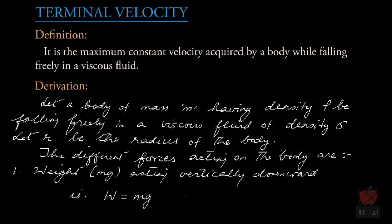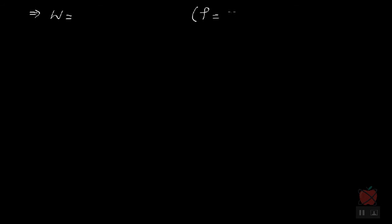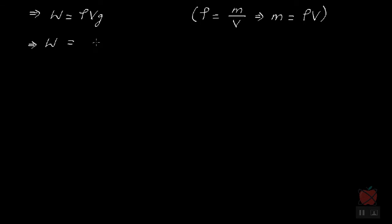Weight W equals mg. Since density rho equals mass divided by volume, mass equals density times volume. So W equals rho times V times g. Since the body is a sphere, its volume is (4/3)πr³. Therefore the weight is (4/3)πr³ρg. This is the expression for weight acting downward — that is the first force acting on the body.